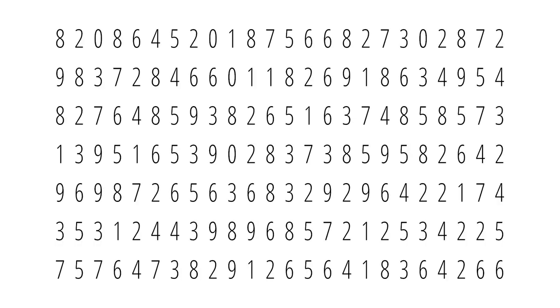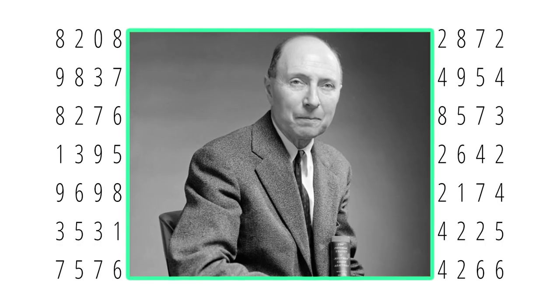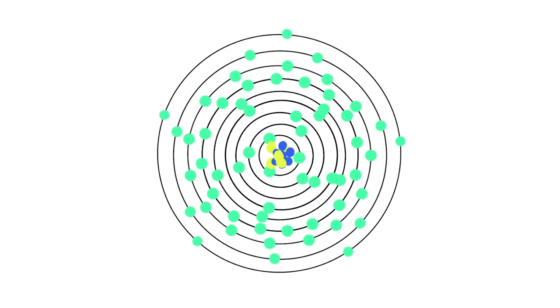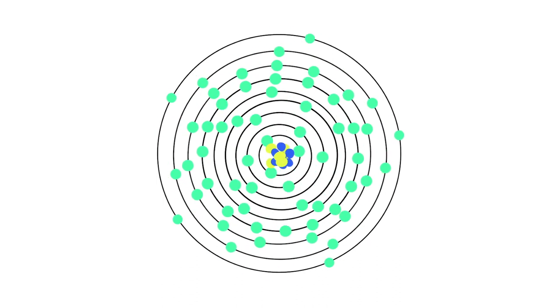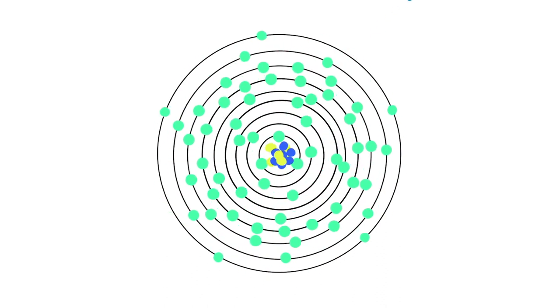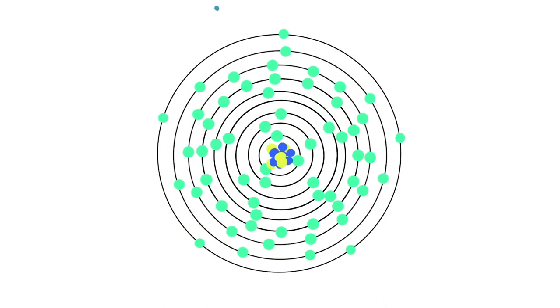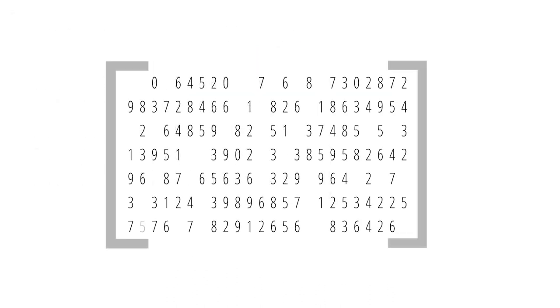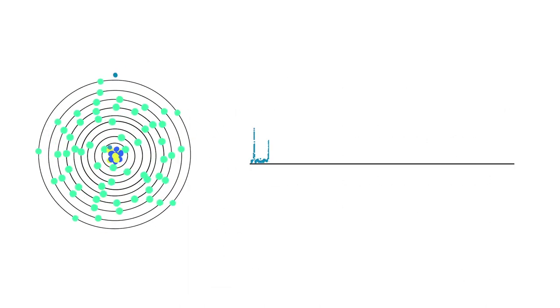The idea of random matrix universality goes back to Eugene Wigner, a Nobel Prize-winning theoretical physicist who worked on the Manhattan Project. Wigner was attempting to calculate the energy levels of a uranium nucleus, which has more than 200 protons and neutrons that can arrange themselves in all different configurations. The associated energy levels of the system were far too complex to calculate. Wigner used random matrices instead and plotted the statistical distribution of eigenvalues. He found that the spacing of these numbers matched the spacing of energy levels of uranium and other heavy atomic nuclei.